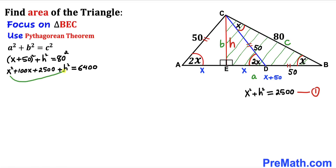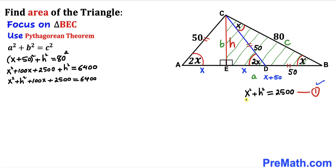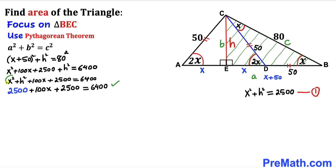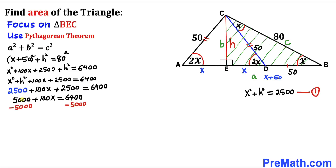Rearranging, we put x squared and H squared together. From equation one, x squared plus H squared equals 2500, so we replace that expression with 2500. Combining like terms, 2500 plus 2500 gives 5000. Subtracting 5000 from both sides: 100x equals 1400. Dividing both sides by 100, x equals 14 units.